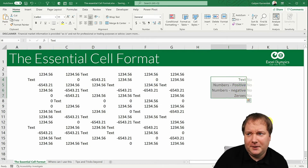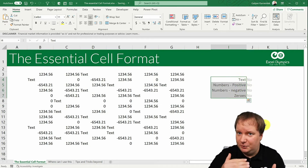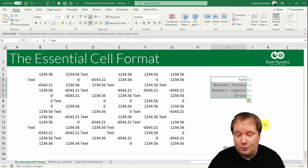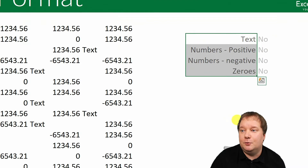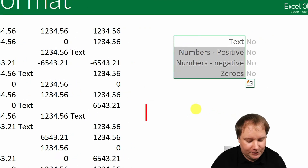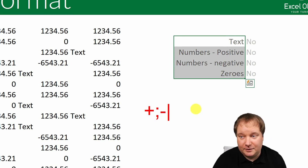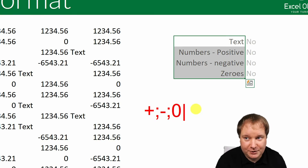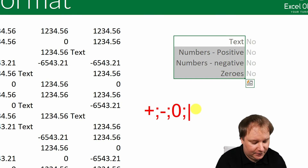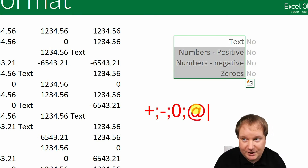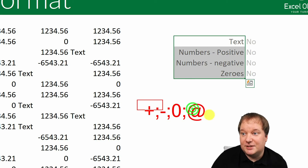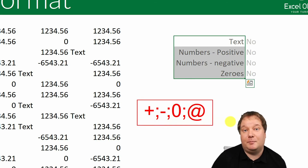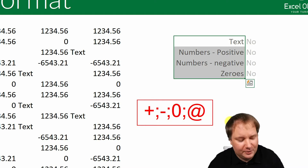You should memorize this because the order is always the same: positive numbers first, then negative numbers, then zeros, and finally text. Write it down exactly like this because this is how you should remember it.